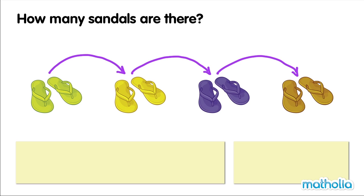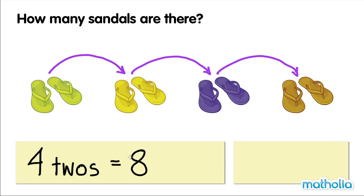Four twos equals eight. Four times two equals eight.